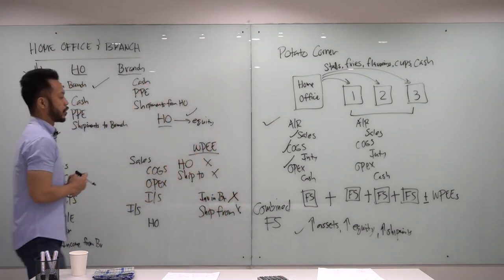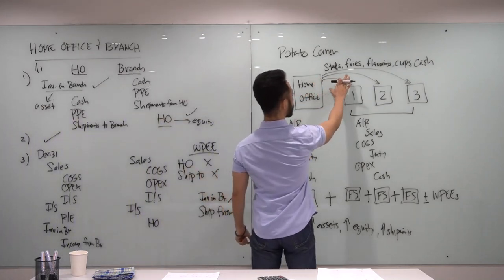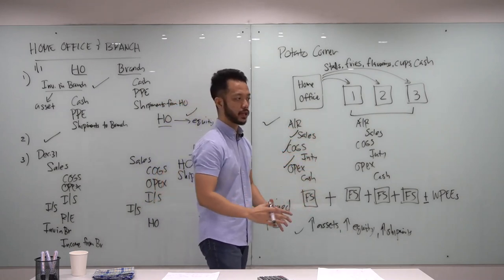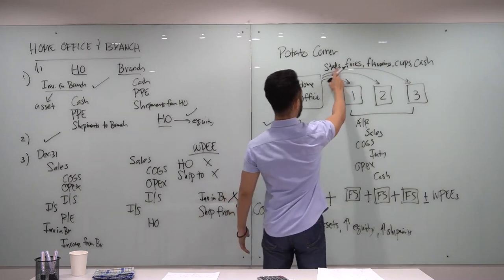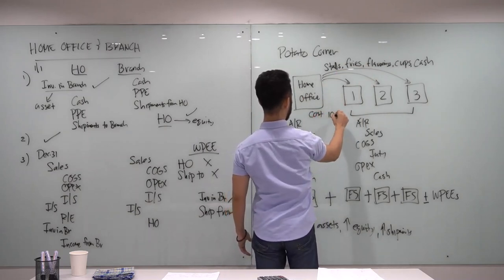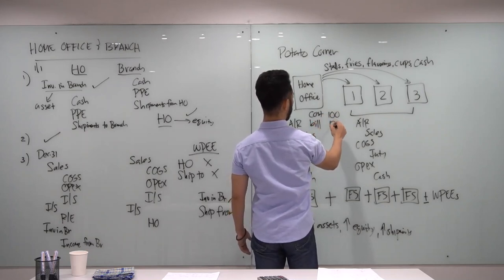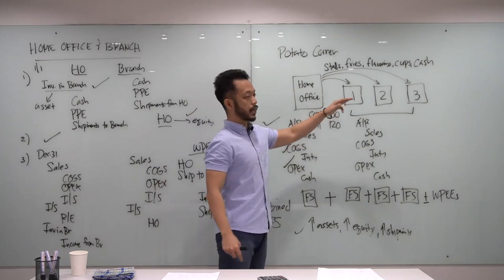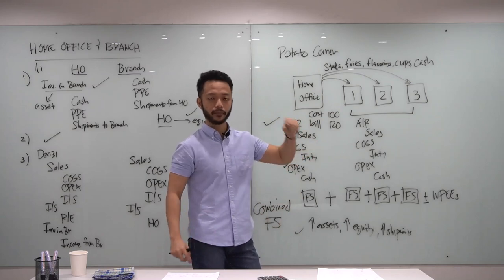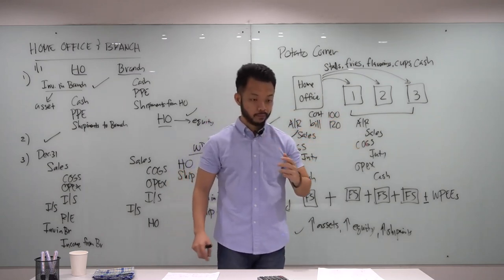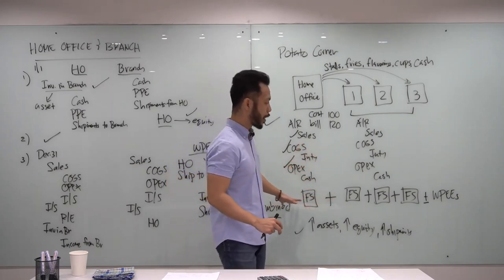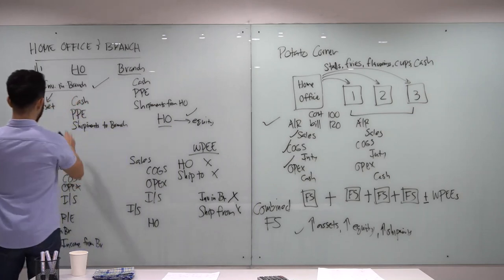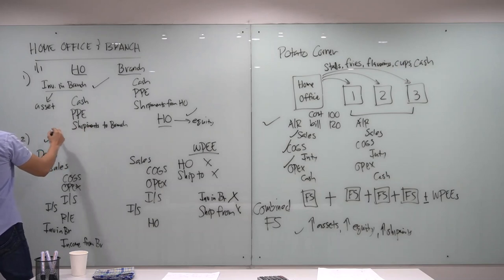There is one more issue. The home office can ship inventory like fries and flavorings to the branch at cost, or it can mark them up and earn a profit from the branches. For example, if the cost of fries is 100 but the home office bills the branch 120, that's a 20% markup. The home office charges the branch at a billing price higher than cost.